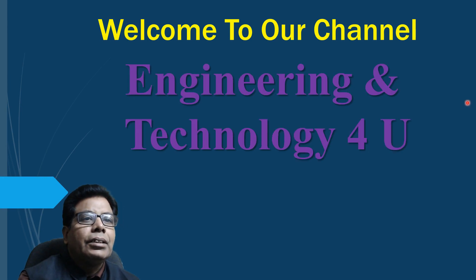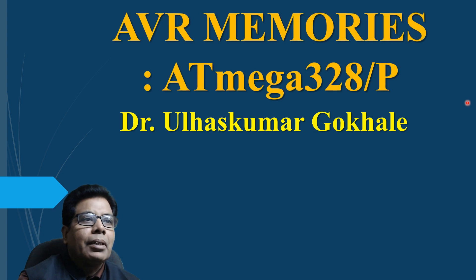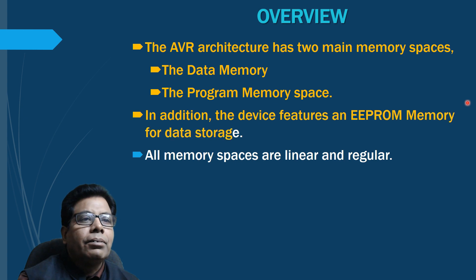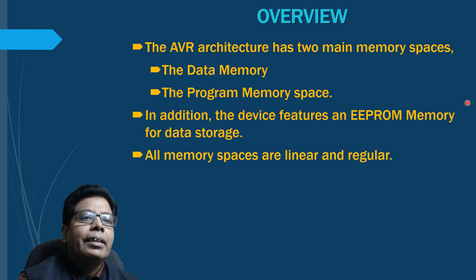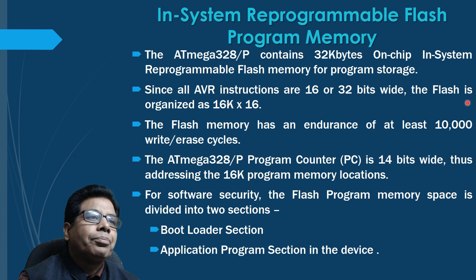Welcome to our channel, Engineering and Technology for You. The topic for today is AVR memories in the device ATmega328P. The AVR architecture has two main memory spaces: the data memory and the program memory space. In addition, the device features an EEPROM memory for data storage. All the memory spaces are linear and regular.